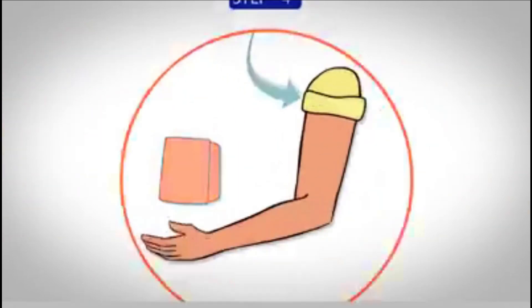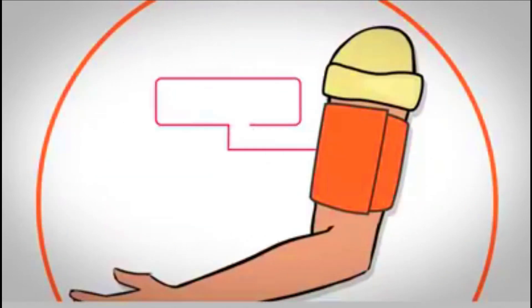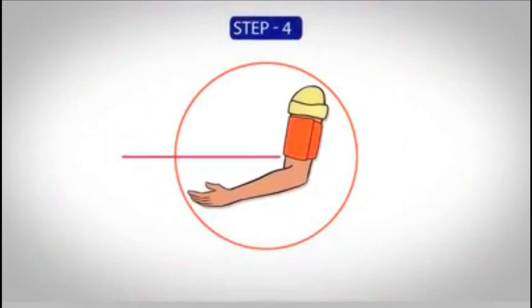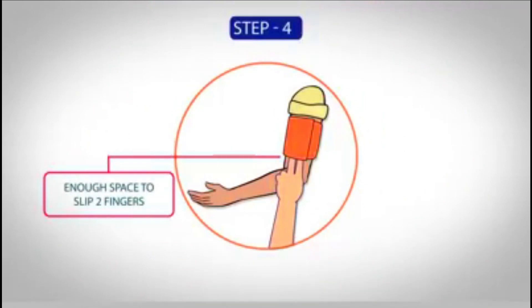The tubing should be centered correctly and the lower end of the cuff should be at least 2 cm above the elbow. The cuff should be neither too tight nor too loose. There should be enough space to slip two fingers underneath it.